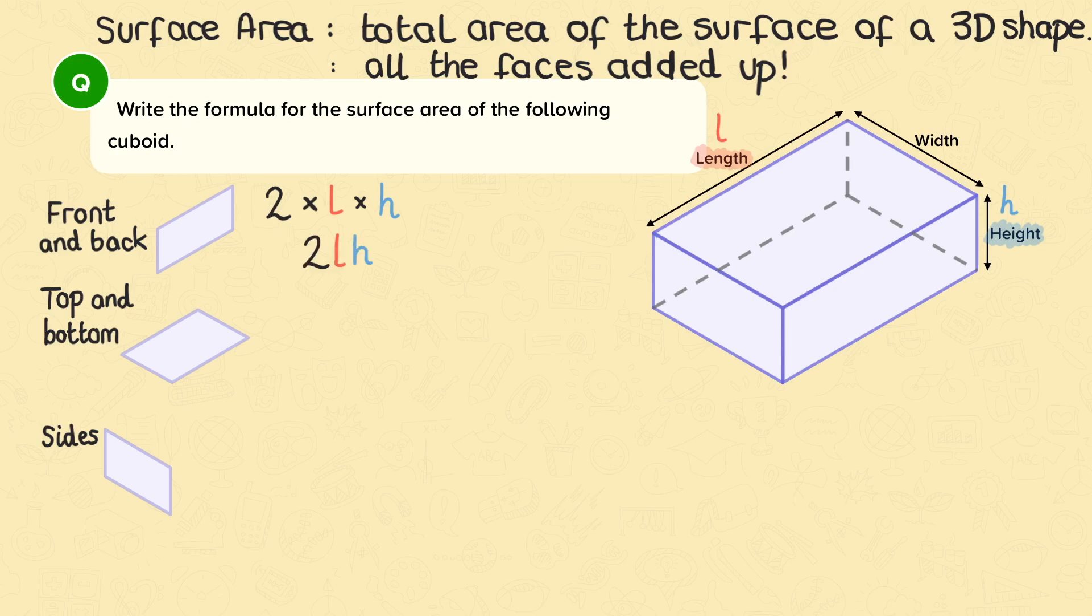To find the top and the bottom, we need to multiply the length by the width, or L times W. As there are two of these faces, we can write this as 2 times L times W, or 2LW.